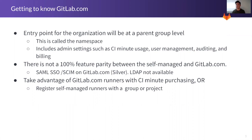You're going to see CI minute usage, user management, auditing, and billing. The second point is there's not 100% feature parity between self-managed and GitLab.com. The important point here is SAML SSO and SCIM for user provisioning and deprovisioning, which is available at the Silver tier. In addition, LDAP is not available as of 13.0 for GitLab.com.